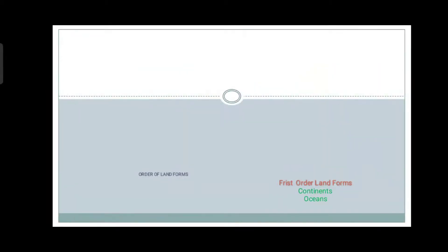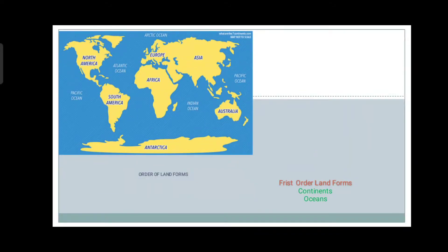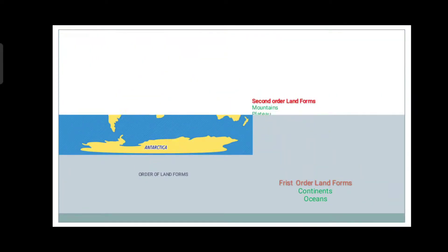Today we are going to learn the types of landforms. There are majorly three types of landforms. The first one is the first order landforms. The earth's crust is divided into continents and oceans. These two terms are called the first order landforms.